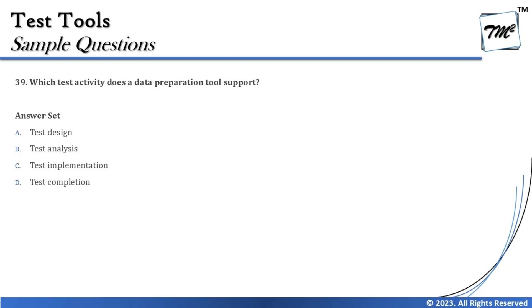Recall: in the analysis phase we do test condition identification; in the test design phase we write test cases and identify data requirements. But test implementation is the phase where we actually write, prepare, create, or validate the data. So test implementation is where this activity takes place.